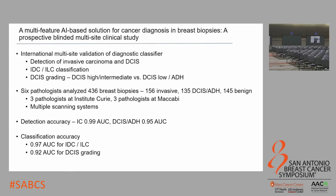This is an example of the type of work you need to do in prospective studies. They have six pathologists — three at Curie, three at Maccabi — who looked at 436 breast biopsies. They used multiple scanning systems, which is important because of the variability in how images are formed. It's important to show that diagnostic AI tools are robust to the scanner. The detection accuracy is really outstanding: 0.99 AUC for invasive carcinomas, and 0.95 AUC for DCIS or atypical ductal hyperplasia.